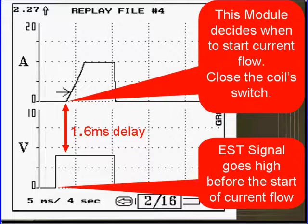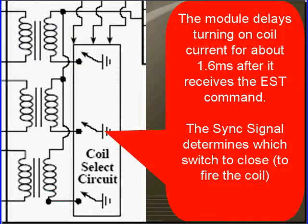EST signal goes high before the start of the current flow. You can see it's 1.6 there. The module delays turning on coil current for about 1.6 milliseconds after it receives the EST signal from the PCM. This is vehicle specific to this example.